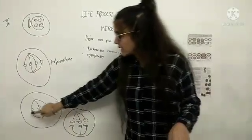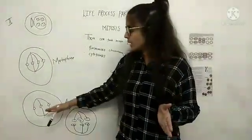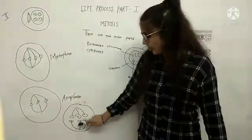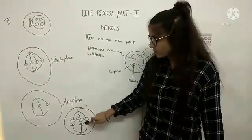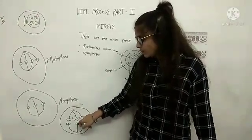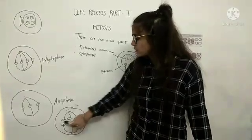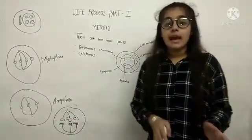In anaphase, centromeres split and sister chromatids are pulled in opposite directions. As you can see, this is downwards and this is upwards. With the help of spindle fibers, this process takes place. These two sister chromatids are called daughter cells. In our last step,